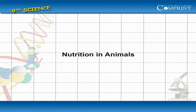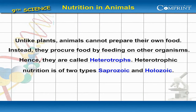Nutrition in Animals. Unlike plants, animals cannot prepare their own food. Instead, they procure food by feeding on other organisms. Hence, they are called heterotrophs. Heterotrophic nutrition is of two types, saprozoic and holozoic.